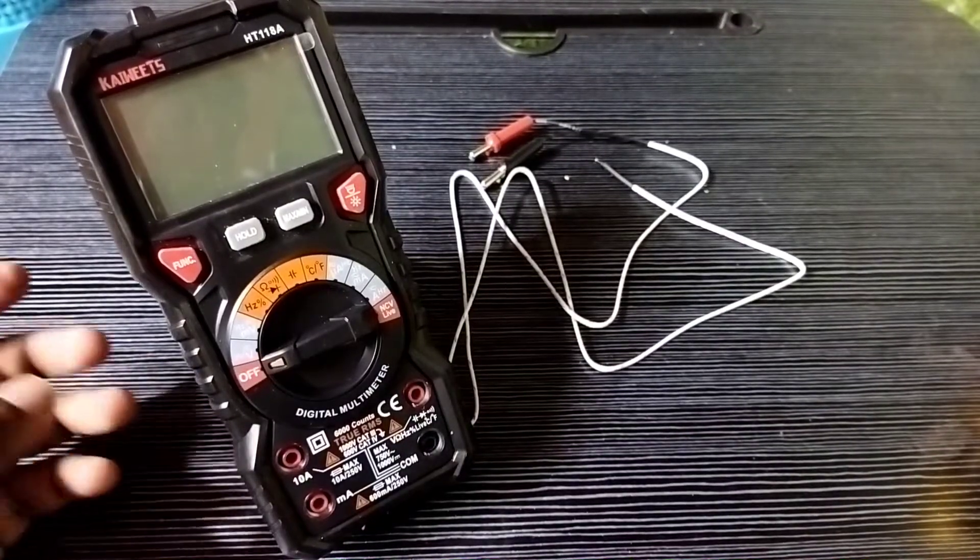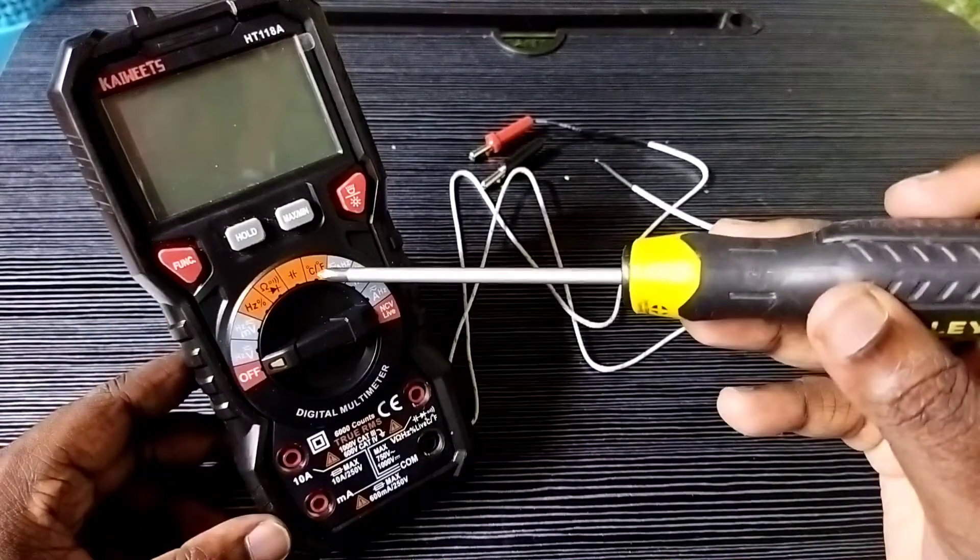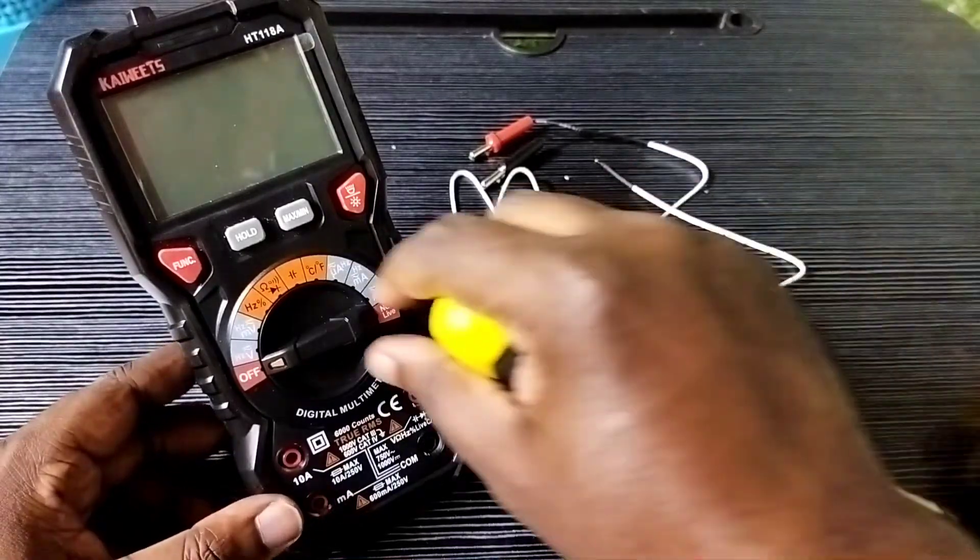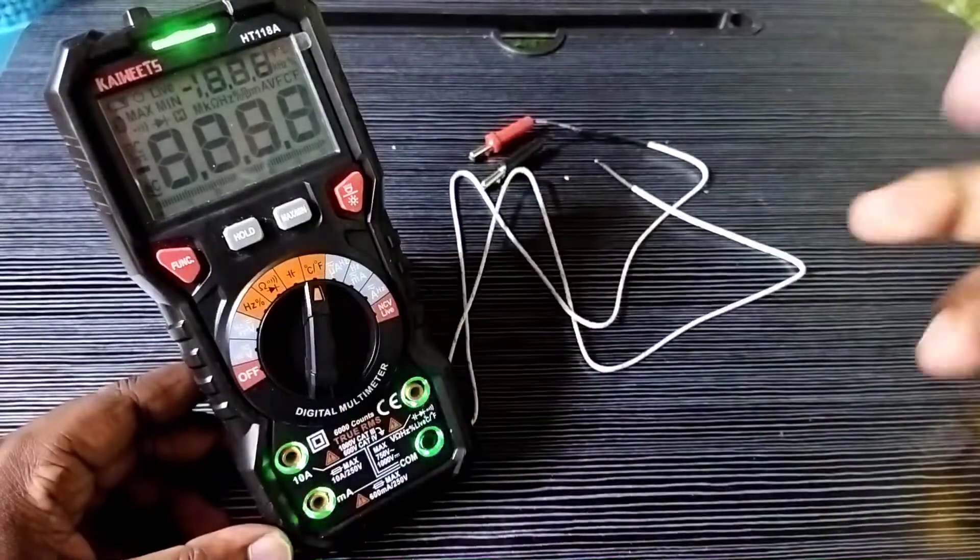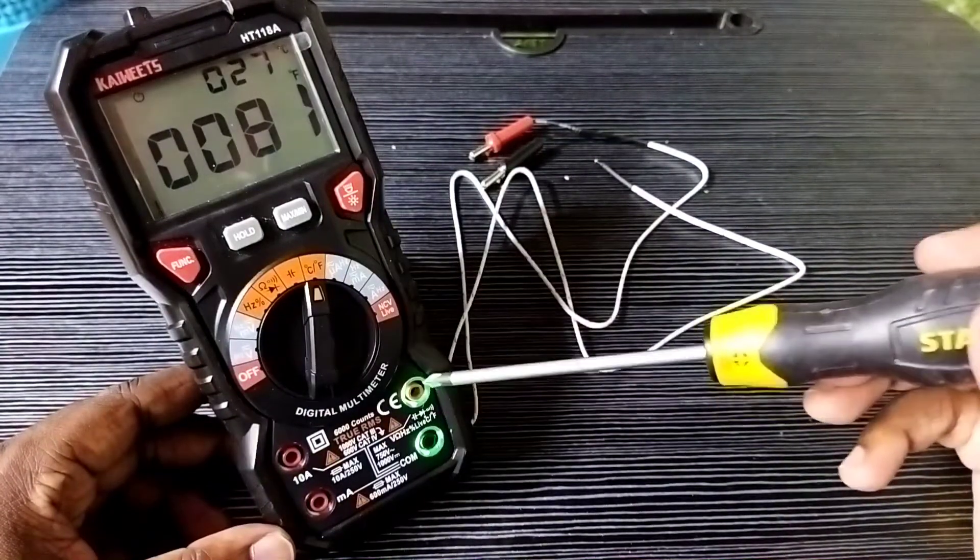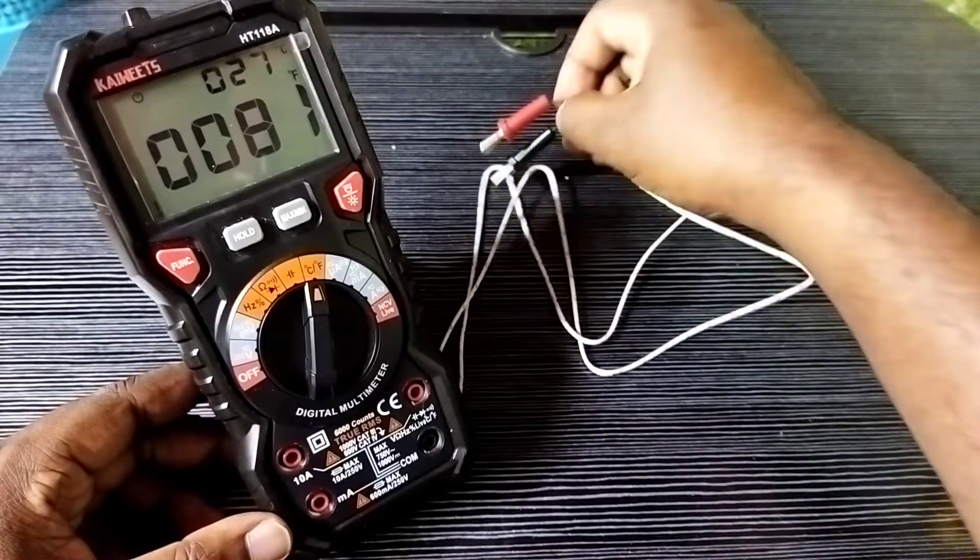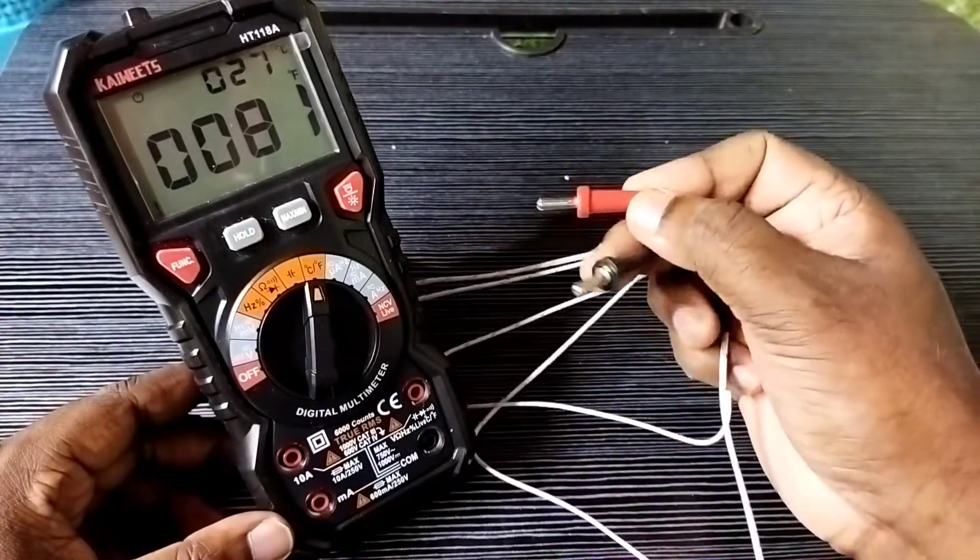Hi friends, this video shows how to measure temperature in degree Celsius and degree Fahrenheit using Kiwitz digital multimeter. First, we need to select this temperature function using the rotary switch. Then here we need to connect the cable, this test cable that is a special cable.